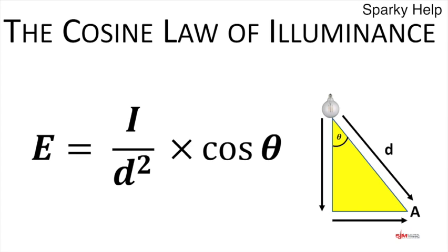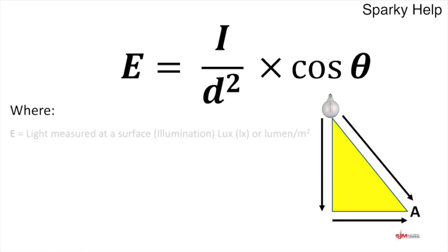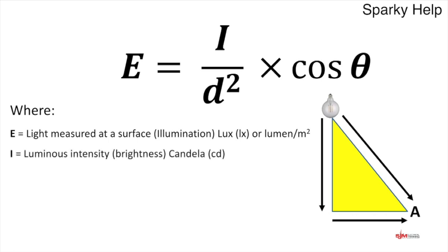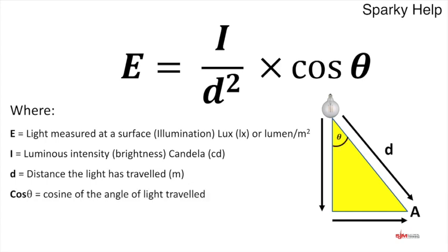The cosine law of illuminance: lighting doesn't just light directly below, it also lights in all other directions. So you have the angle. It starts off as the same formula E equals I over D squared, then you multiply by the cosine of the angle. The thing to note is D is the distance the light has traveled - the diagonal, the hypotenuse of the triangle. The cosine is based on the angle from the light itself.